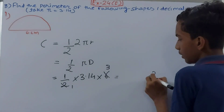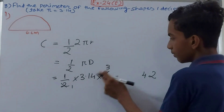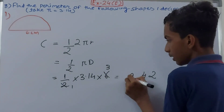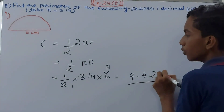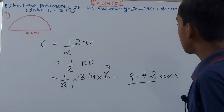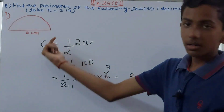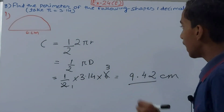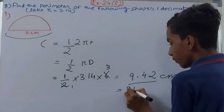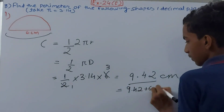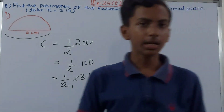Calculating: 3.14 × 6 = 18.84, then divide by 2 to get 9.42 centimeters. This is the circumference of the semicircle, but to find the full perimeter we must also add the diameter. So 9.42 + 6 = 15.42 centimeters. That is the perimeter of the first shape.